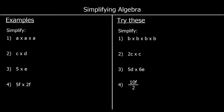The first example says simplify a times a times a. When we have a number multiplied by itself, so if we had 5 times 5 we can write that as 5 squared. If we have 5 times 5 times 5 we can write that as 5 cubed. That works for any number.